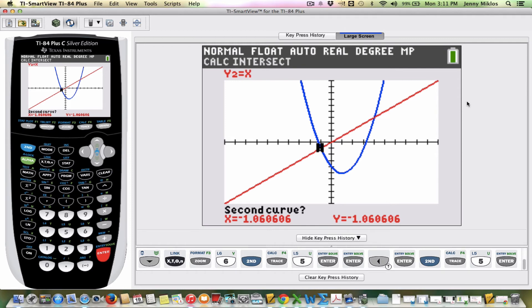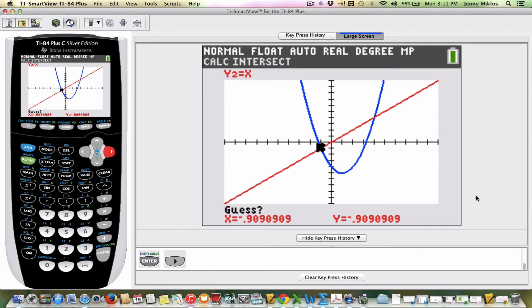Now it's jumping to that second equation. I can see it says y sub 2 here. And I'm going to press enter. And now I'm going to have to move. I'm pressing the right arrow. I'm moving over to where I think that point of intersection is. So I'm close to it. I'm going to press enter.